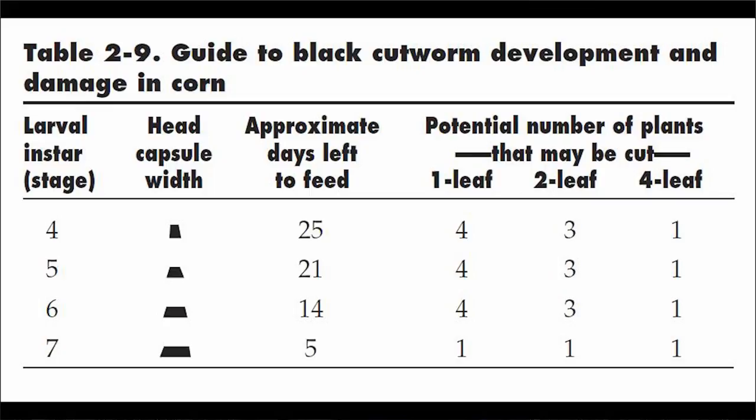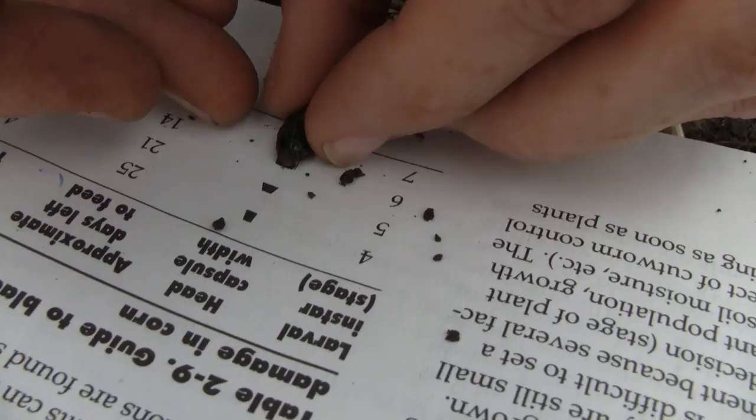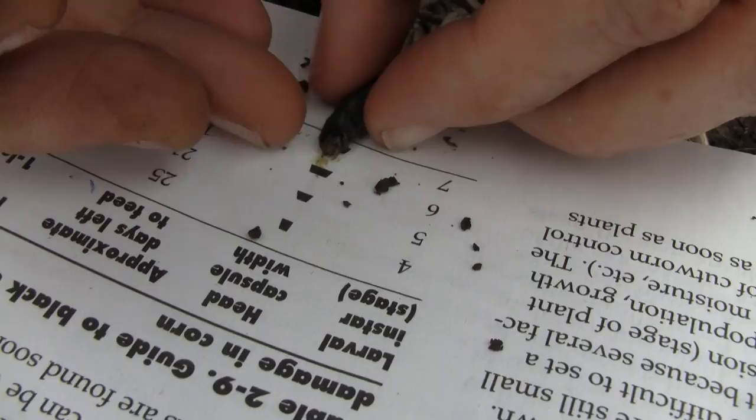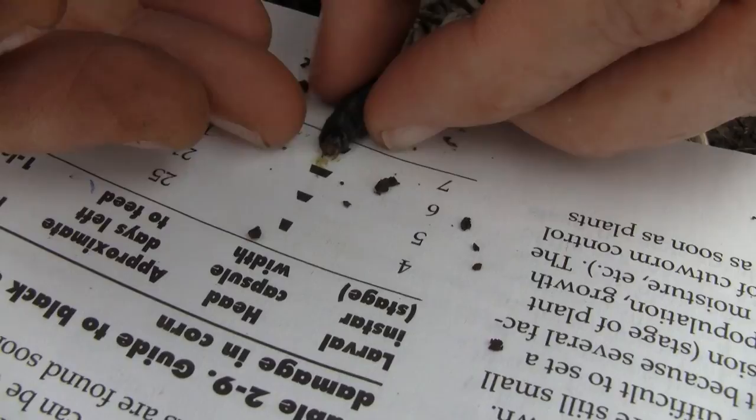If you're at threshold and looking at insecticide recommendations, you can also use Table 2-9 in publication A3646. It has a table where you can line up the head capsule — the very tip of the head of the black cutworm larvae — to gauge whether the larvae is in the 4th, 5th, 6th, or 7th instar. This is important because as the larvae gets towards 7th instar, it only has about 4 or 5 days of feeding remaining, so it really wouldn't be economical to treat at that point.